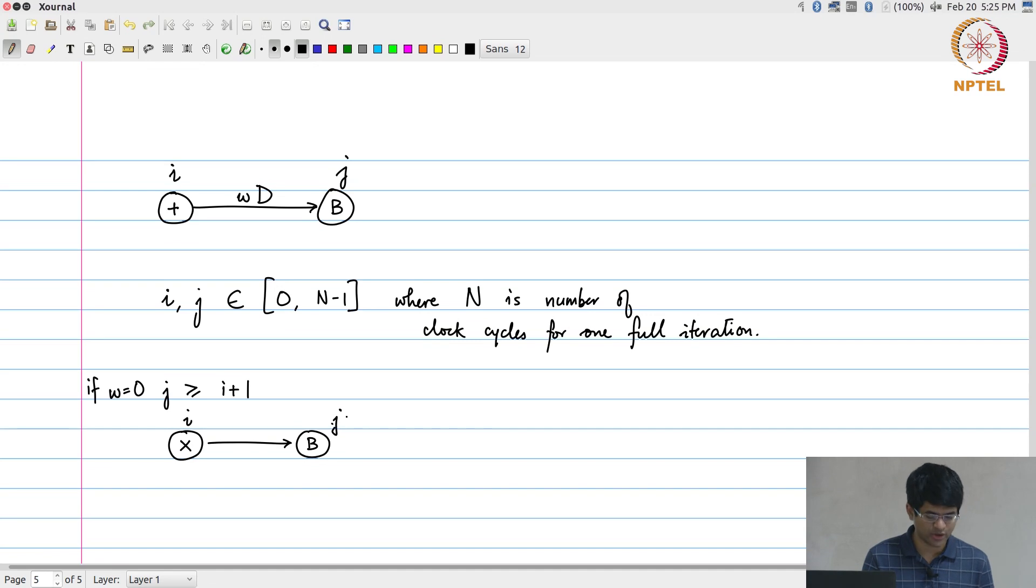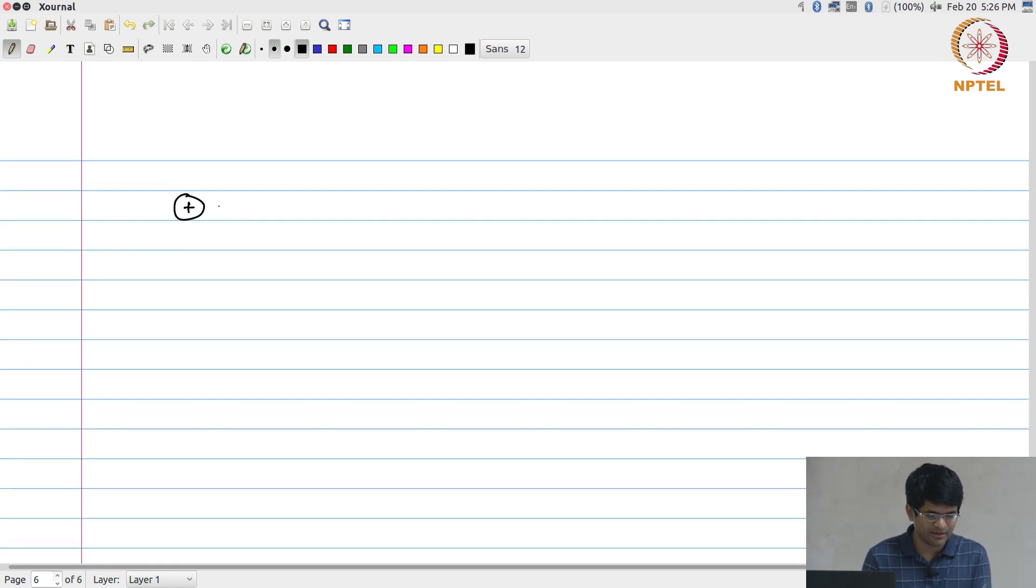In this case what should it be? j must be greater than or equal to i plus 2, because for the result of that first multiplication to come out it has a latency of 2 clock cycles. If this was an adder, there was a delay element, and this was some other unit, then I actually do not need to worry about j being greater than or equal to i plus 1.